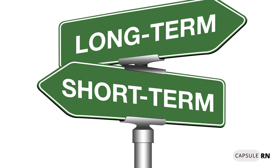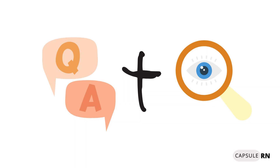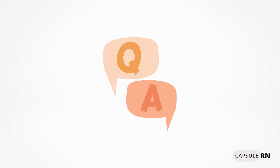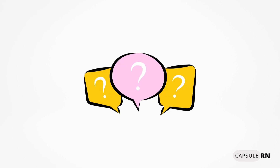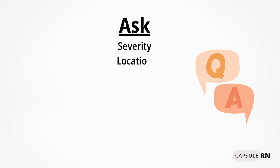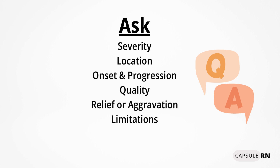Whether a patient's pain is chronic or acute, nurses must regularly assess a patient's pain when taking their vital signs by both asking questions and observing behaviors. Asking the patient questions allows the nurse to gather subjective data to understand what the patient is feeling, whereas observing the patient's pain characteristics helps gather objective data that is visible and can be seen. What exactly should a nurse ask when assessing pain? You will want to ask about the patient's perception of their pain, which will include knowing its severity, location, onset and progression, quality, what relieves or aggravates it, any limitation the pain causes, and any symptoms that accompany the pain.